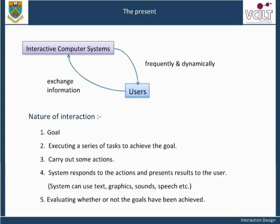Step 1: User has a goal, something to achieve. Step 2: User looks at the system and attempts to work out how to execute a series of tasks to achieve that goal. Step 3: User carries out some actions, providing input to the system by pressing buttons, touching a screen, speaking words, etc.